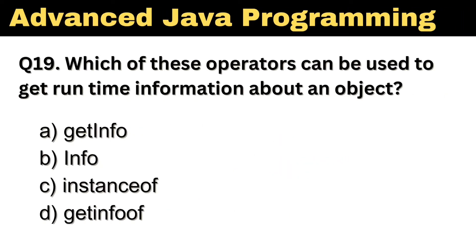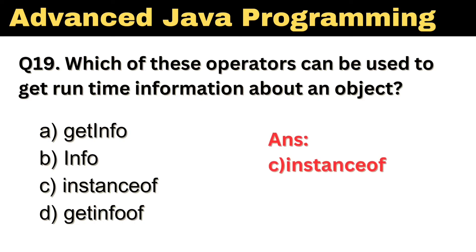Question number 19. Which of these operators can be used to get runtime information about an object? The right answer is option C: instanceof.